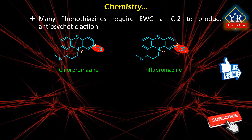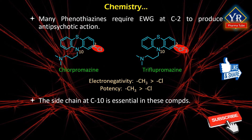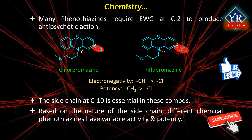For example, chlorpromazine has a chloro group and trifluopromazine has a trifluoromethyl group. It was noticed that the potency of phenothiazine was increased with the electronegativity of these groups. Since the trifluoromethyl group is more electronegative than chloro, drugs with trifluoromethyl at the second position are more potent - that is why trifluopromazine is more potent than chlorpromazine. One of the important chemical features of phenothiazines is the side chain at the 10th position; based on its nature, we can have different chemical classes with variable activity and potency.